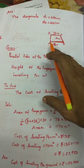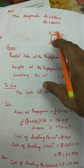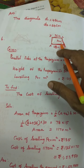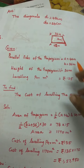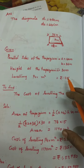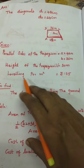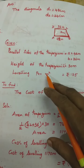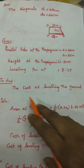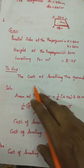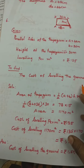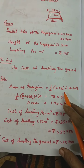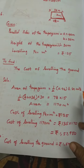Draw the diagram: parallel sides 42 m and 36 m, height = 30 m. Levelling rate = ₹135 per square metre. Area of trapezium = (1/2) × (A + B) × H square units.